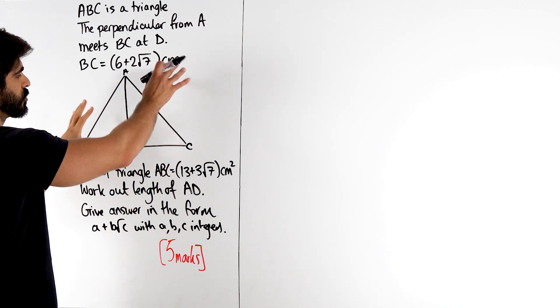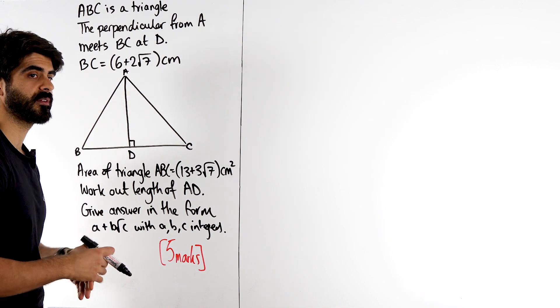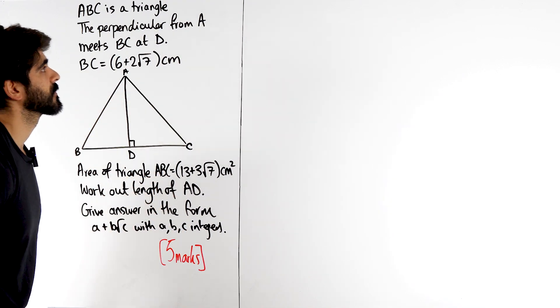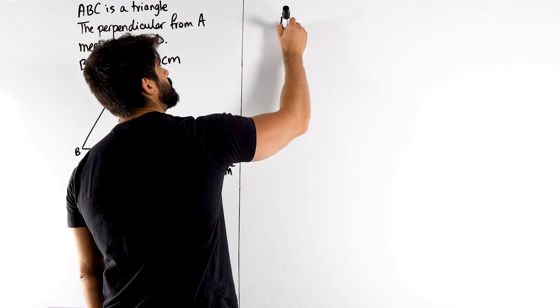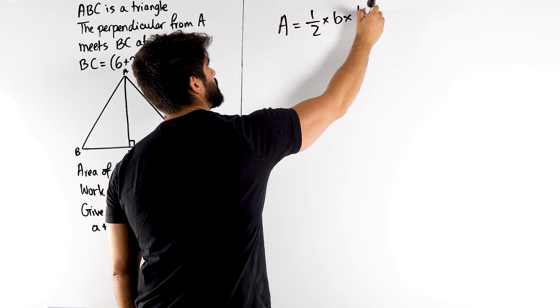It's just usually, when we have these awkward triangles, we can't find the vertical height, so they just give us an angle. We have to use cosine rule, half AB sine C, all of that kind of stuff. So, we're going to say the area is a half times the base times the vertical height.